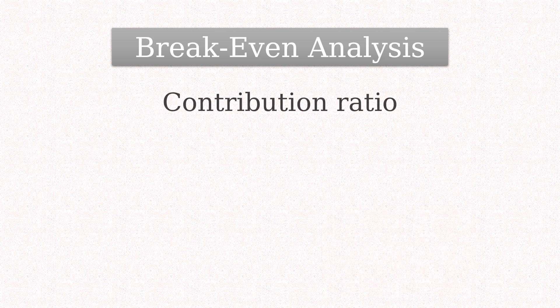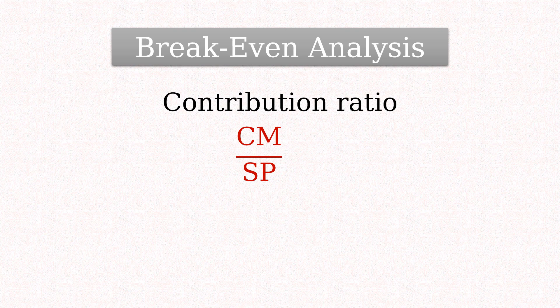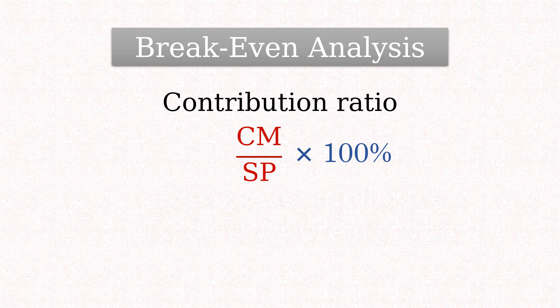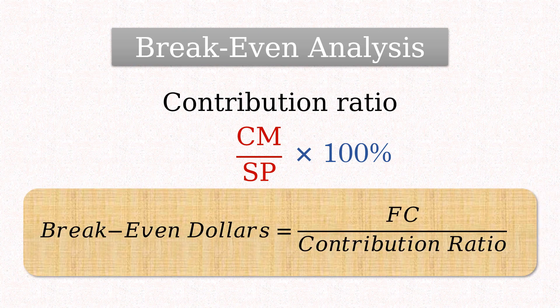Finally, we have the contribution rate or ratio, which expresses the contribution margin as a ratio or percentage of the selling price. We can use it to determine the breakeven dollars, that is, the total cost or total revenue at breakeven. And that can be determined by dividing the fixed cost by the contribution ratio.